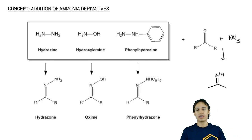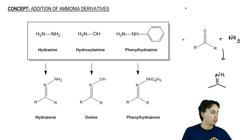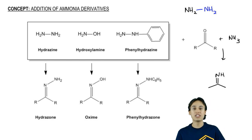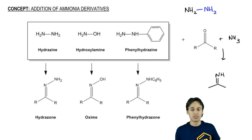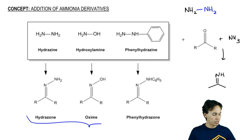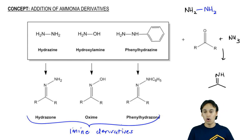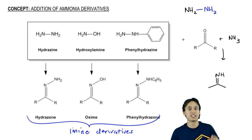What would happen if instead of reacting with NH3, you take out one of the H's — NH2 — and you replace it with something else? Let's say you replace it with another amine. Then what would happen? This is where you get your imine derivatives. Ammonia derivatives are going to yield what we can call imine derivatives, because they all look exactly like an imine except they just have different functional groups coming off of the nitrogen.